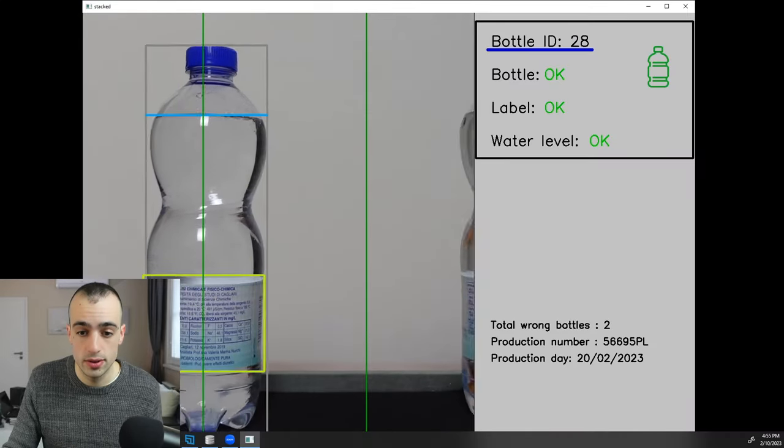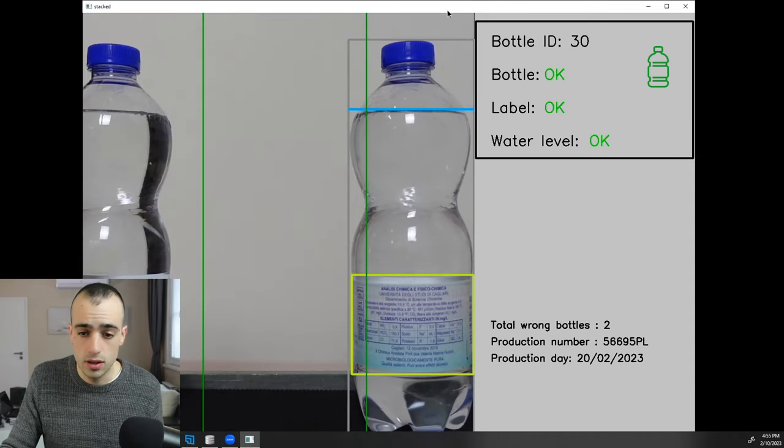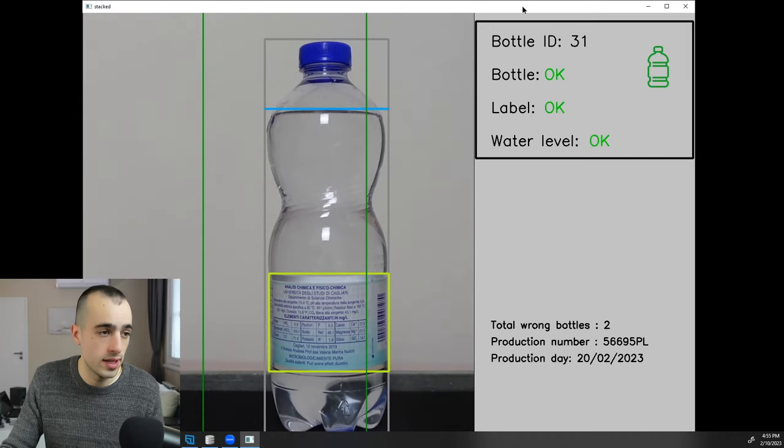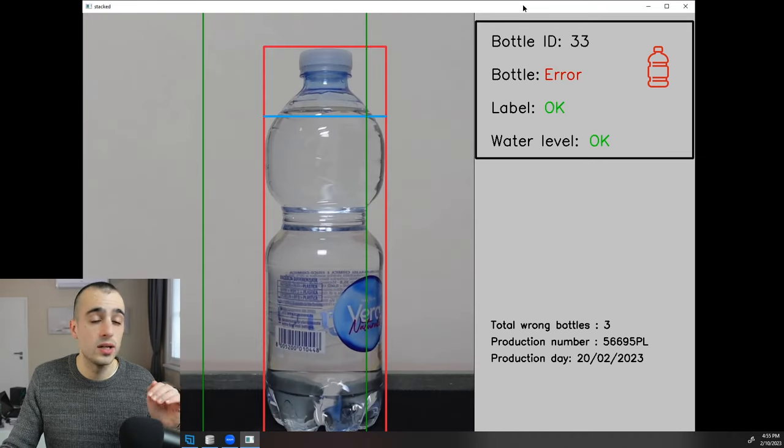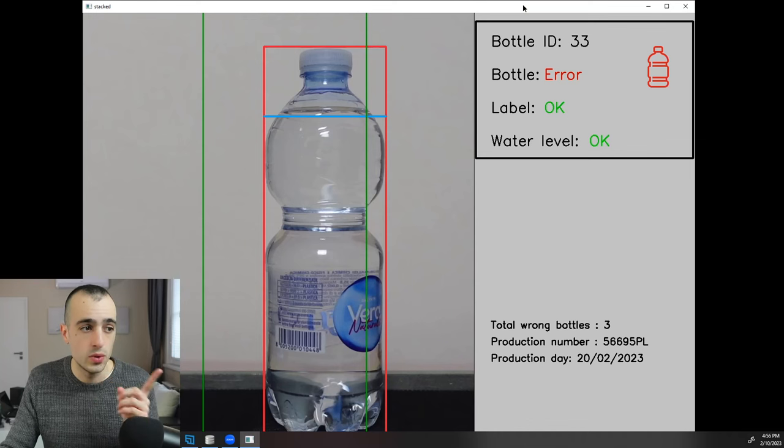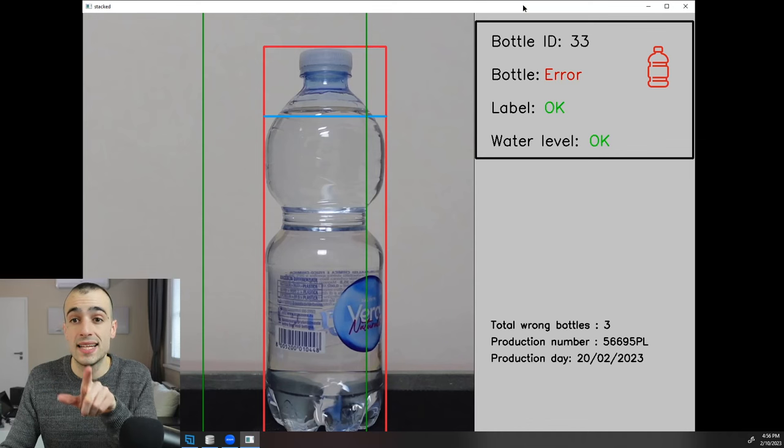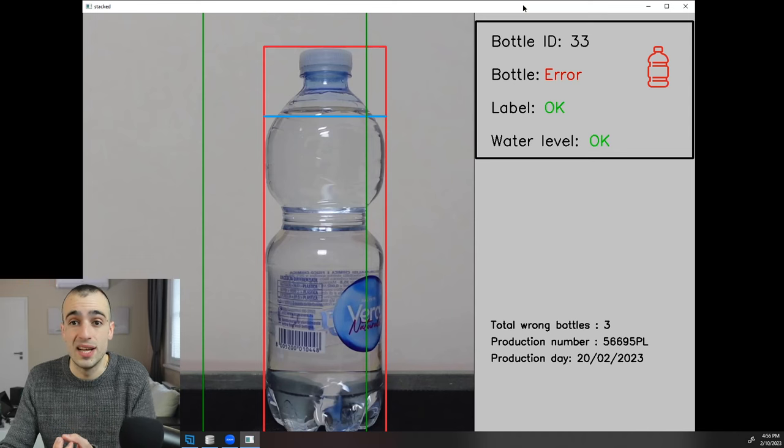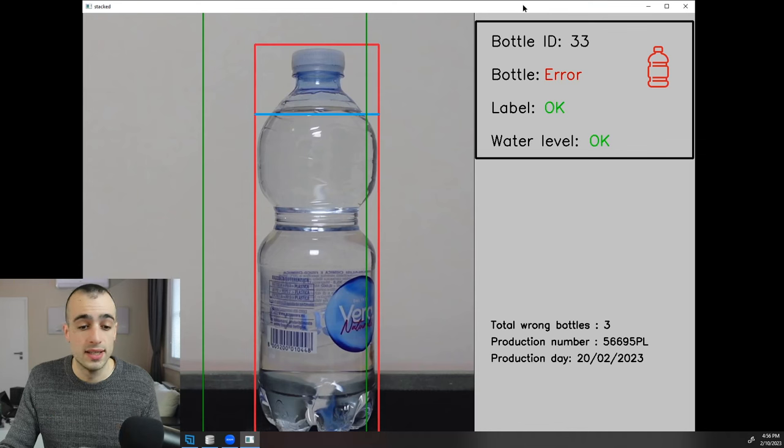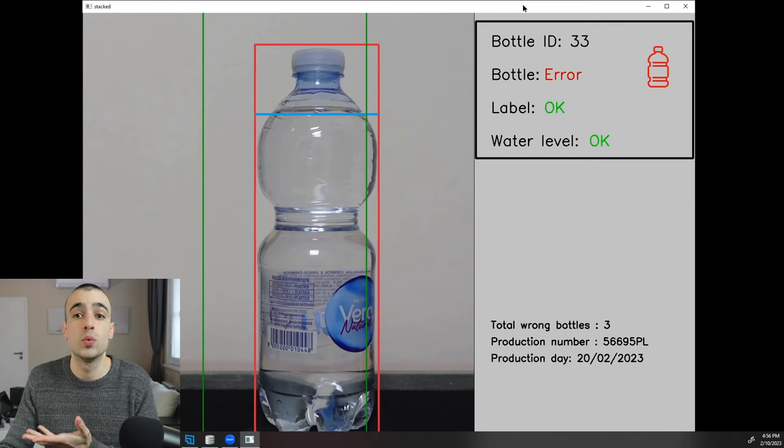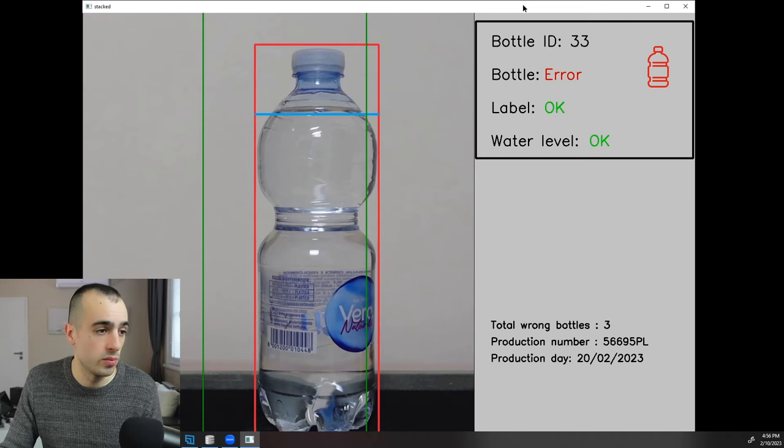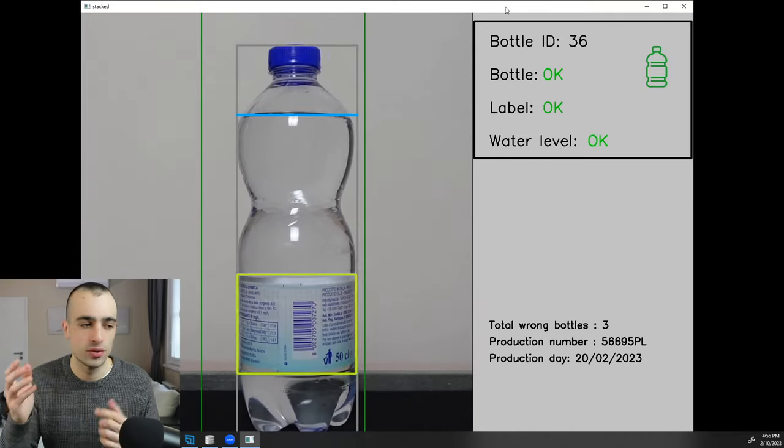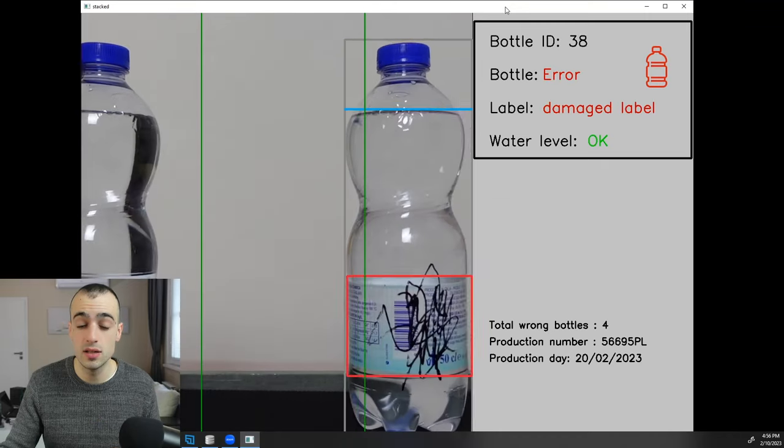Let's get back to the information that we have regarding this. You can see the label, the water level, and if there is some error detected, or some problem with the bottle, we will have, like for example, this one, wrong bottle. You see bottle ID 33, we see bottle error, because we detect that's the wrong bottle, so we get a real-time alert. And if you want, you can send also some output, you can get some sound alert if it's necessary, or you can send some signal to the conveyor belt to stop. That depends on how you need to implement this into your production line. And we have also the total count of the wrong bottles, production number, production day, and so on.